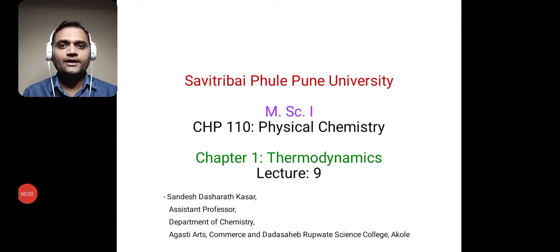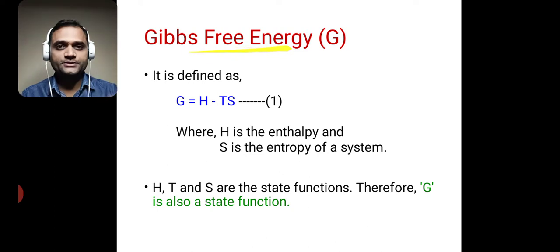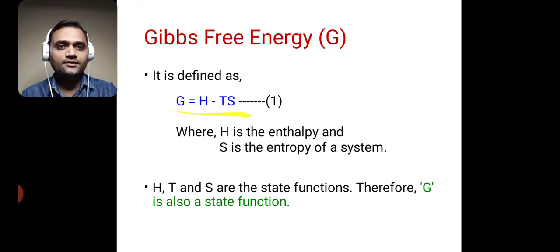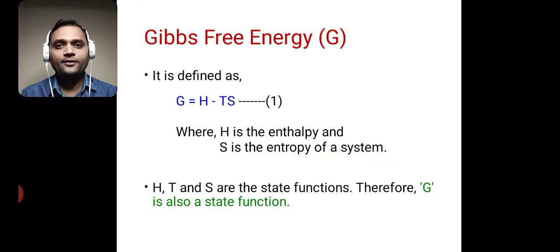Welcome to the ninth lecture of the chapter thermodynamics. Today we are going to study Gibbs free energy. It is denoted by capital G and it is defined as G is equal to H minus TS, where H is the enthalpy, S is the entropy of a system, and T is the temperature.